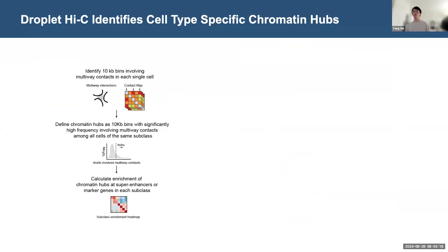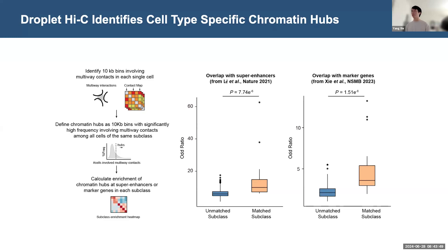With this data, we can do research on cell type-specific compartments, domains, or loops. I want to mention the chromatin hub, which remains relatively under-explored in Hi-C data. A chromatin hub is defined as genomic bins involved in multi-way contacts with significantly higher frequency. With this chromatin hub information, we can calculate the enrichment of cell type-specific regulatory elements, such as super-enhancers calculated from single-nucleus ATAC data, or the enrichment of marker genes defined from the single-nucleus RNA modality of the multi-omic dataset. We found that the enrichment of super-enhancers or marker genes from the same cell type in which the hub is defined have a stronger association with the hub compared to those from different cell types, suggesting that multi-way contacts from the hub are actively associated with cell type function in the mouse brain.